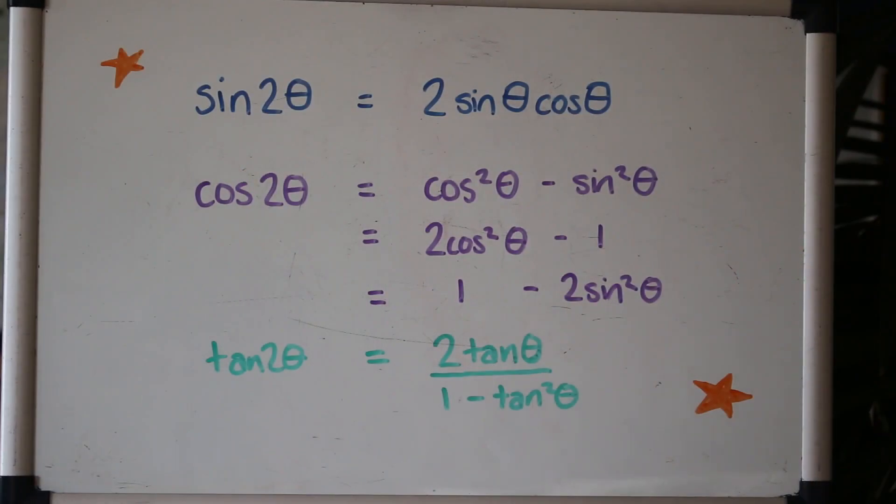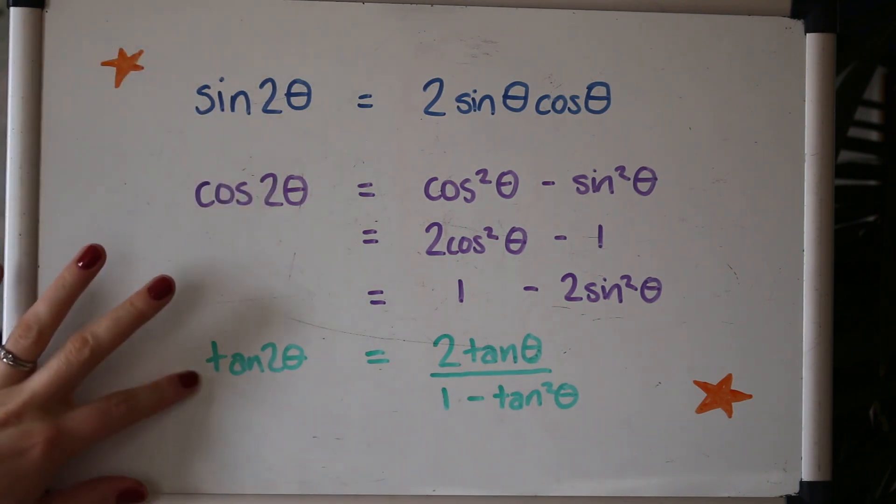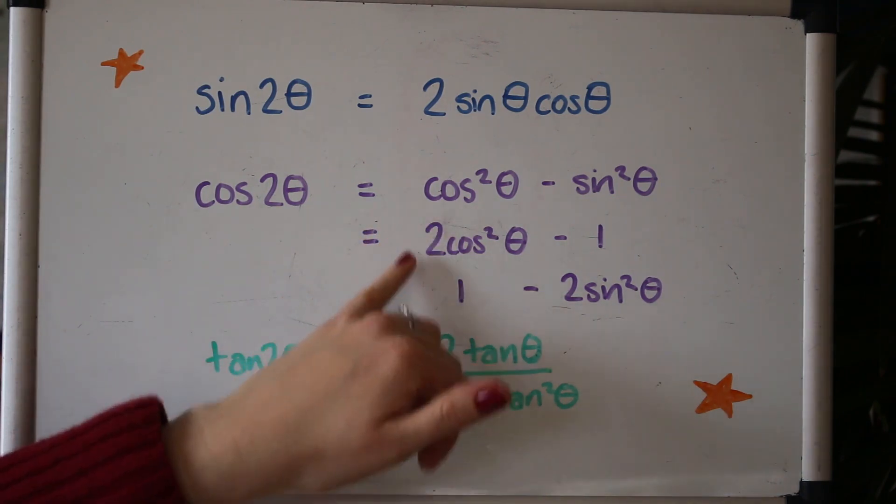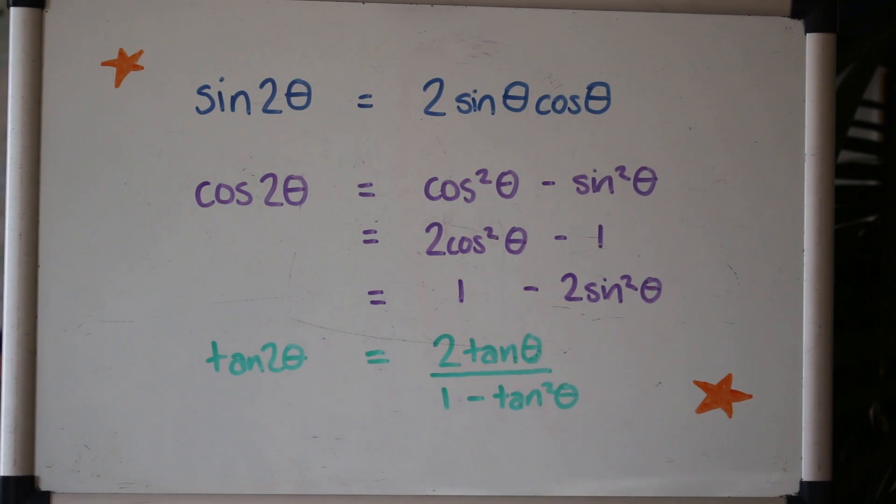So these are the double angle formulae and normally these aren't given to you in a formula sheet so you do need to remember them, or you can derive them which I'm going to show you how to do. Sin2θ and tan2θ only have one version. cos2θ has three versions. They're all equivalent and you can swap between them and just use whichever one is best for the context of the question that you're doing.